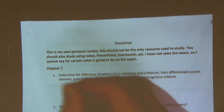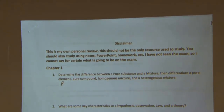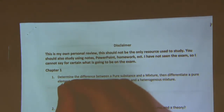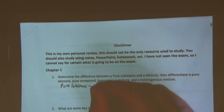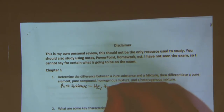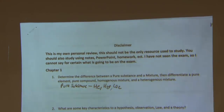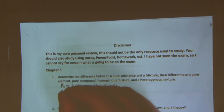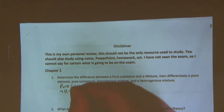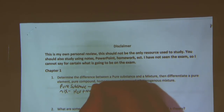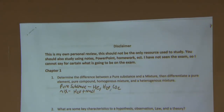A pure substance would be something that occurs naturally on its own, like an atom or a compound. Examples include helium, H2O, CO2, and so on. A mixture would just be a mixture of those things — for example, salt water, which is a mixture of H2O and sodium chloride, or sand and water.